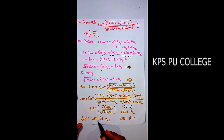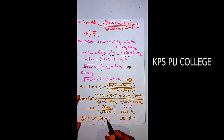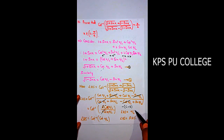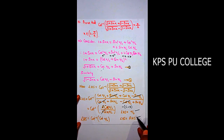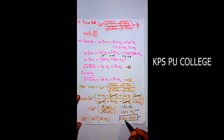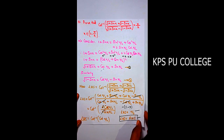So we have cot⁻¹(cot(x/2)). The cot⁻¹ and cot cancel, leaving x/2. Therefore LHS = RHS = x/2. This is question number 10.